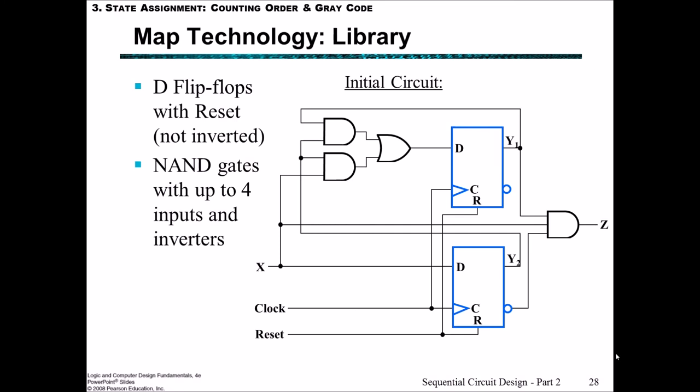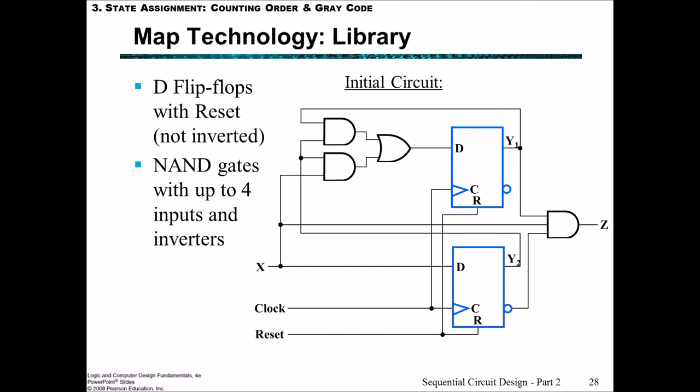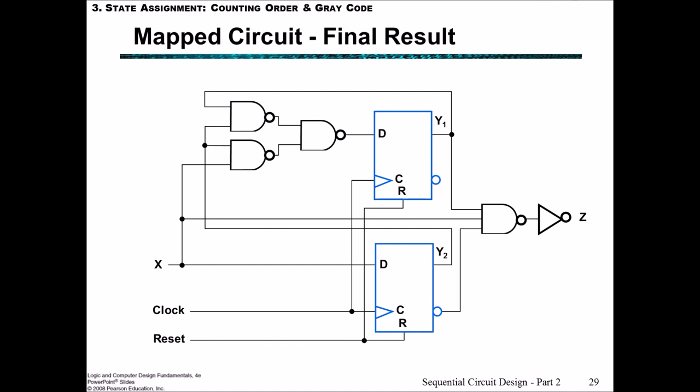So remembering that D2 is equal to x as is, hence why x is connected directly to the second flip-flop here. D1 is equal to y1 and y2 or x and y2. And Z is equal to x and y1 and not y2. So that matches up with what our initial circuit is. However, it was specified that we needed to use NAND gates with up to 4 inputs and inverters. So converting from our previous circuit to NAND gates only, we change our 2 ANDs and 1 OR into 3 NANDs. And we change the output for Z into 2 NANDs in a row where one of the NANDs is essentially just an inverter because it only has a single input.